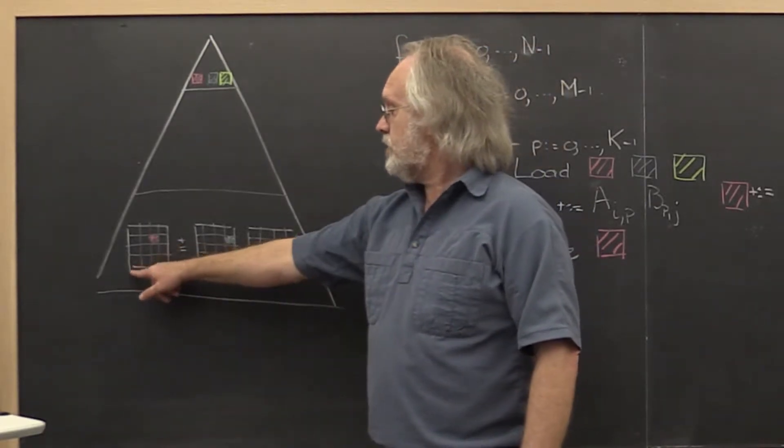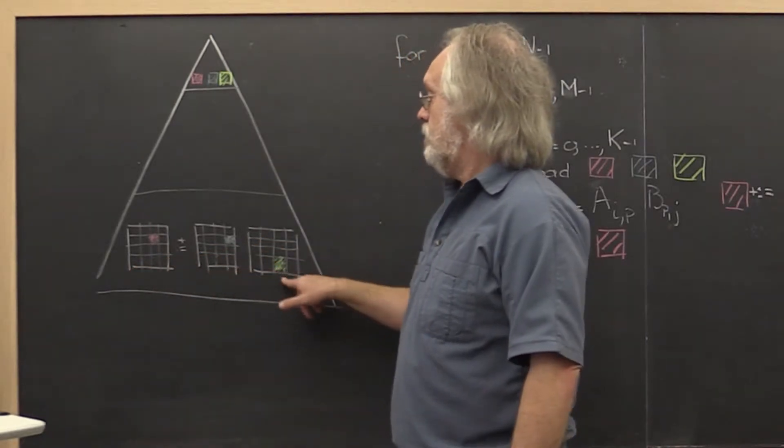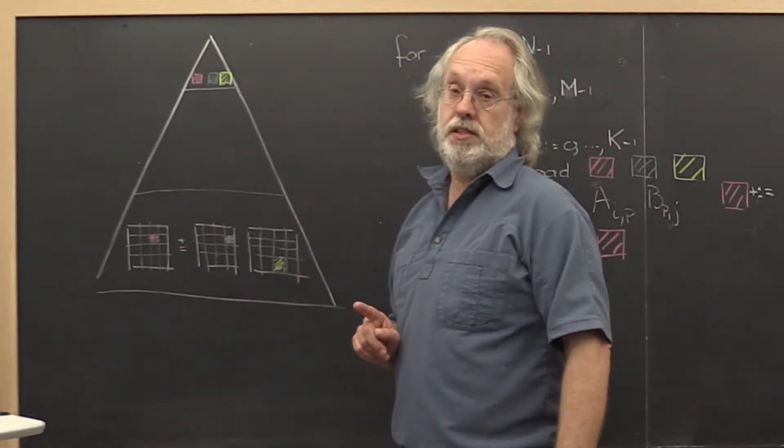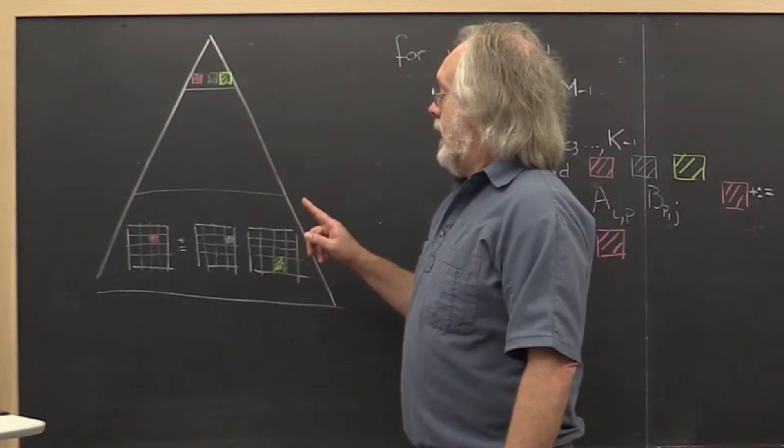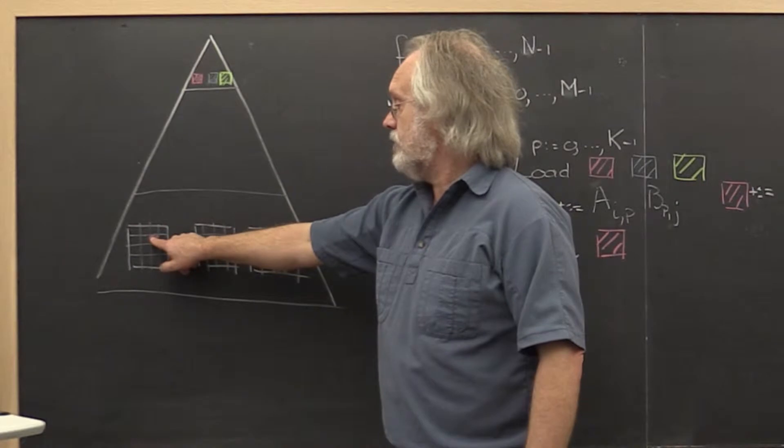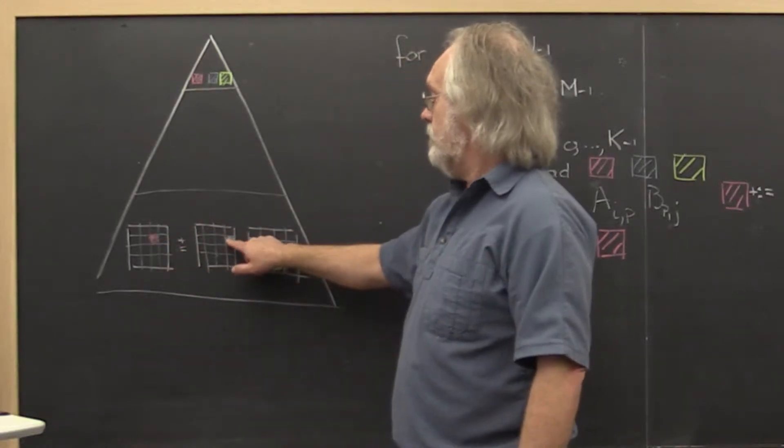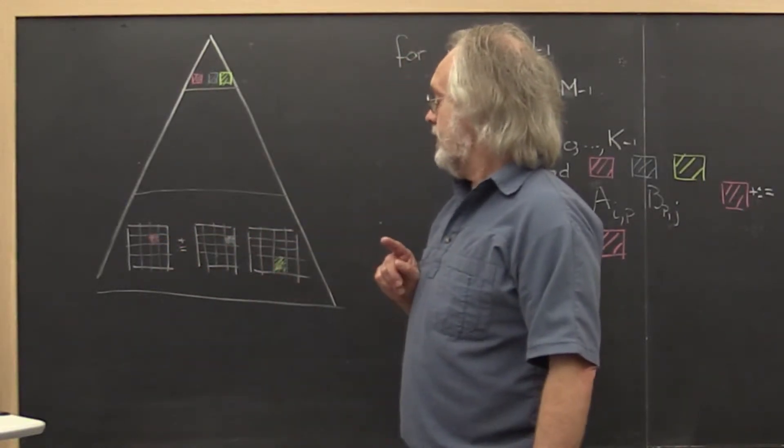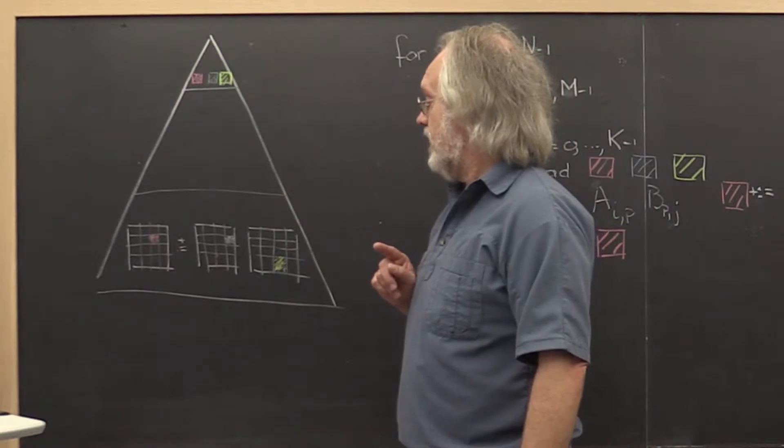We have partitioned matrices C, A, and B into small submatrices. And we are highlighting here a typical step where a small submatrix of C is being updated by multiplying the appropriate submatrices of A and B together.